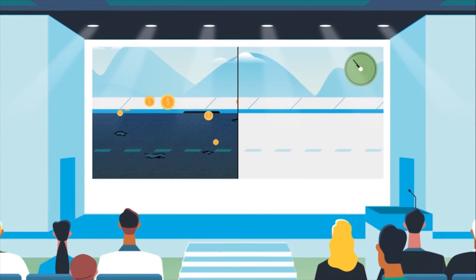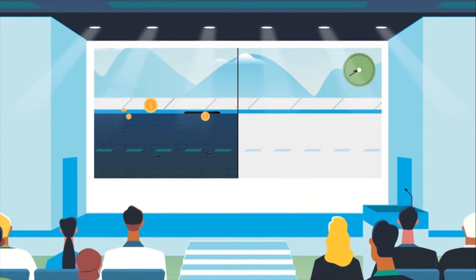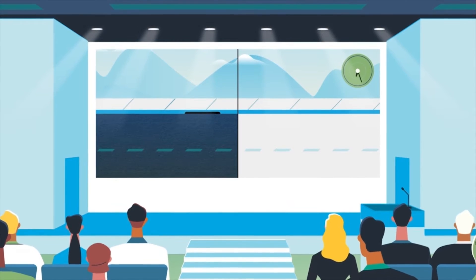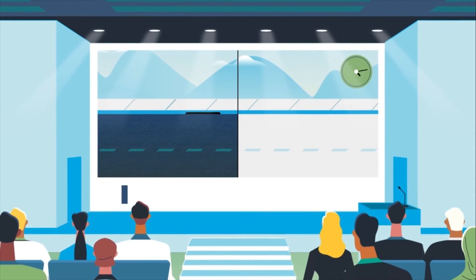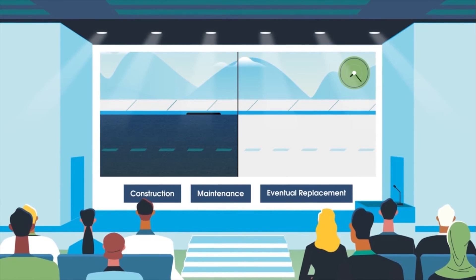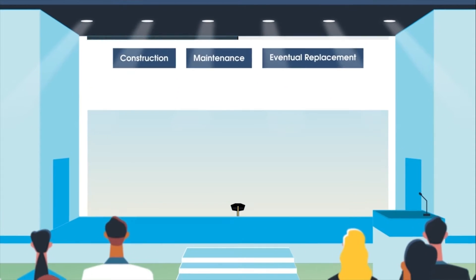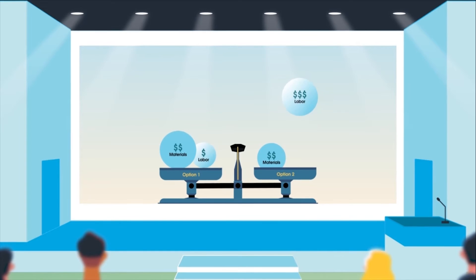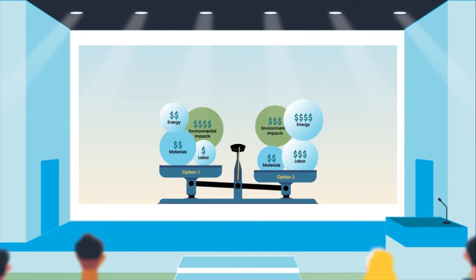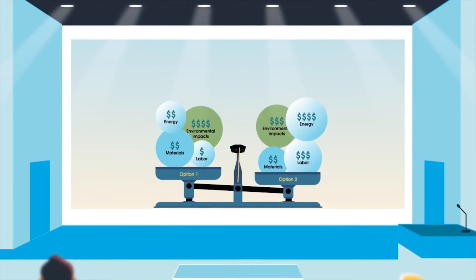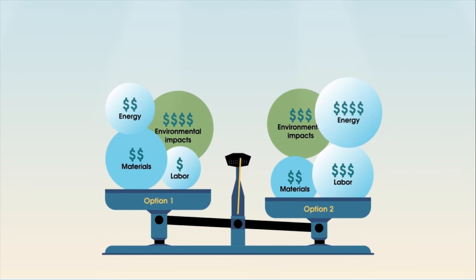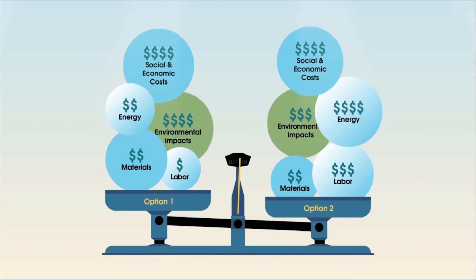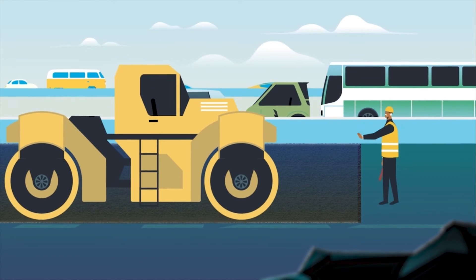Using lifecycle costing, the government of Rivertopia evaluates the costs of both options over the road's entire lifecycle, including construction, maintenance, and eventual replacement. Rivertopia would consider factors such as the cost of materials, labor, energy, and environmental impacts, as well as the expected lifespan of each option. Rivertopia might also consider the social and economic costs of traffic congestion and road closures, which could be minimized by using more durable concrete paving.